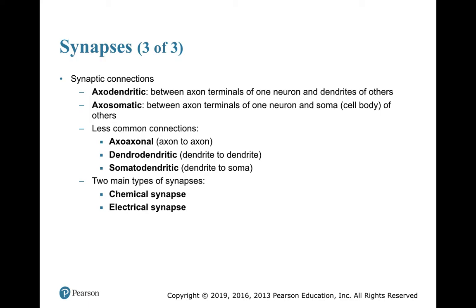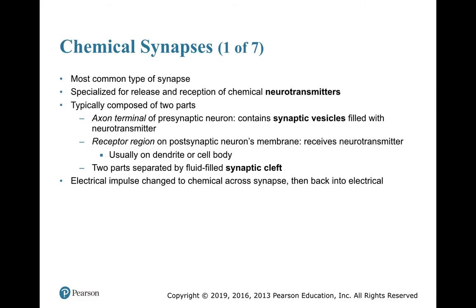The types of synapses fall into two classes depending on how information is passed from the presynaptic to the postsynaptic neuron. Those two types are chemical synapses — the most common by far — and electrical synapses. Chemical synapses release a neurotransmitter and are composed of an axon terminal with synaptic vesicles, a receptor region on the postsynaptic membrane, and a fluid-filled synaptic cleft separating them.